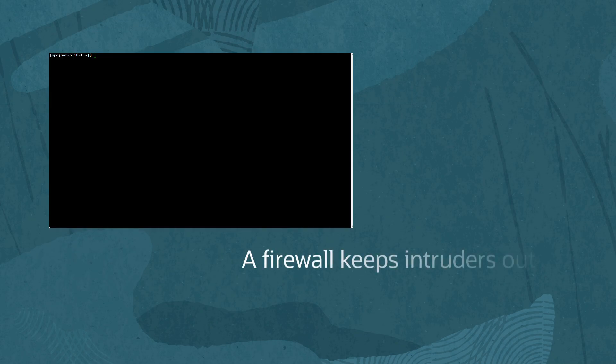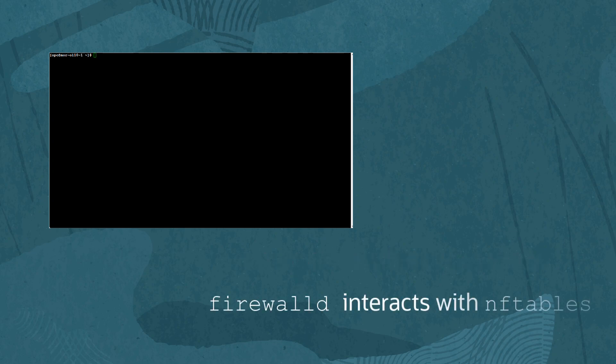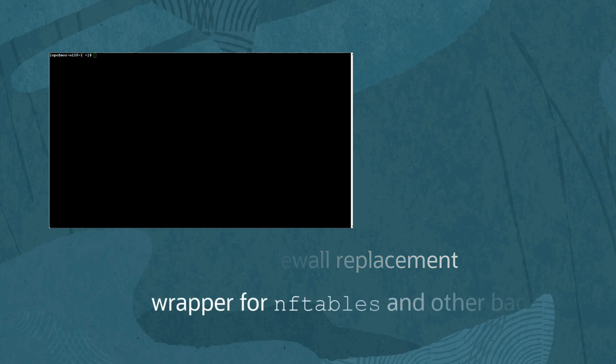A firewall serves as the computer equivalent of a physical wall, gate, or fence to keep intruders out and protect what's inside. In Oracle Linux 8, nftables replaced IP tables, and Firewall-D interacts with nftables directly through the NFT binary. Firewall-D is not a firewall replacement, but a wrapper for nftables and other backends to allow easier management.